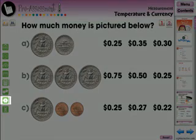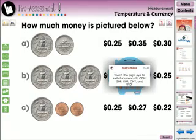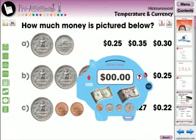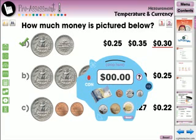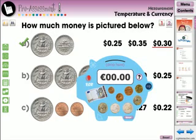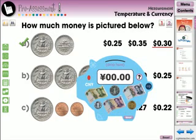The money counter tool is a great tool to understand currency and value. Simply drag the money to the top of the piggy bank to add it up. We provide five different currencies: US dollars, Canadian dollars, British pounds, euros, and Chinese yens.